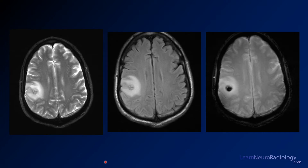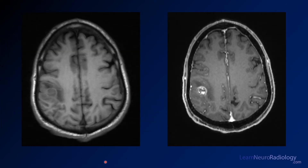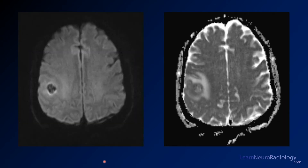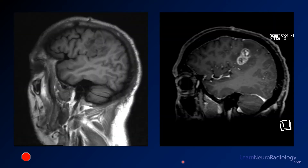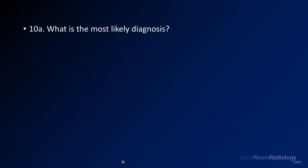Here you see some images from an MR of the brain. These are pre and post contrast images through the same region. Here are your diffusion images through the same area — this is DWI, and this is ADC. Here you see sagittal pre and post contrast images through that same lesion, with the abnormality visible. These are the last images.